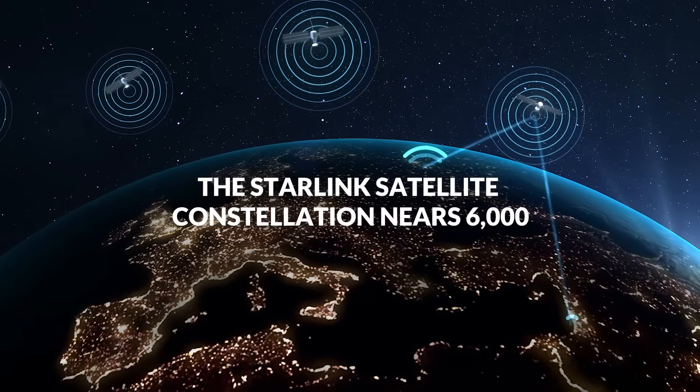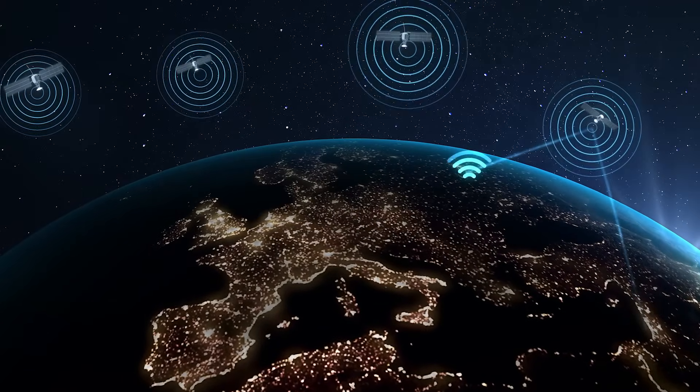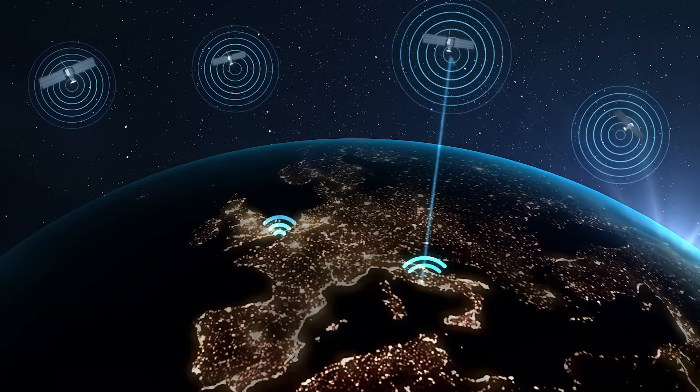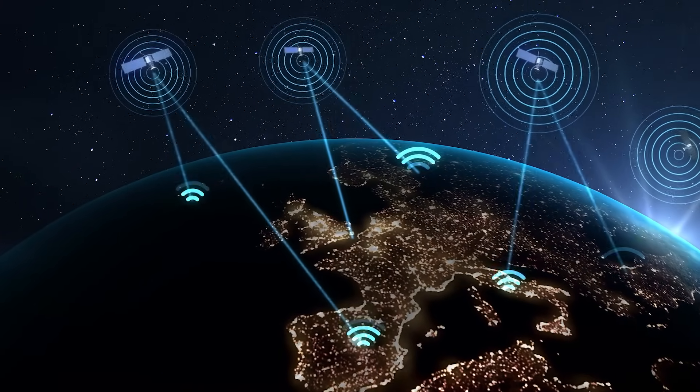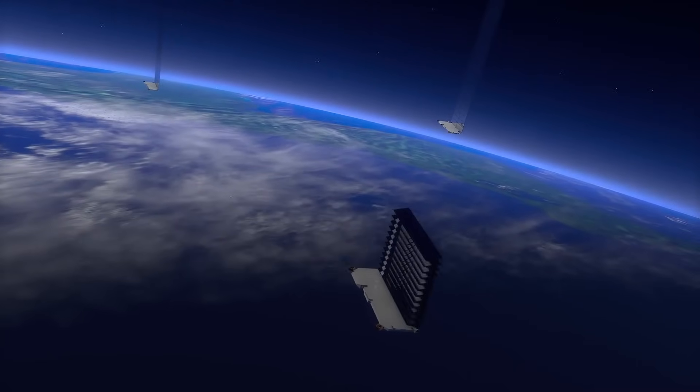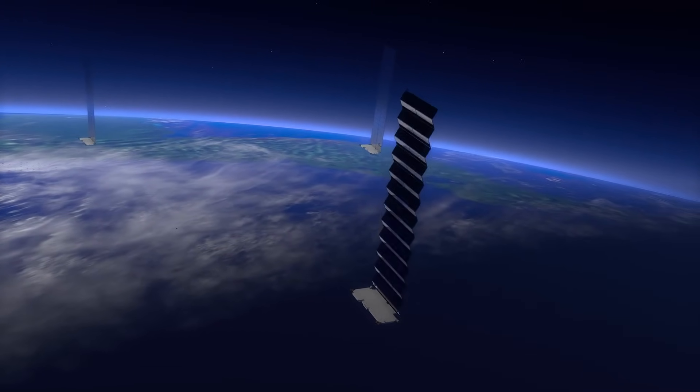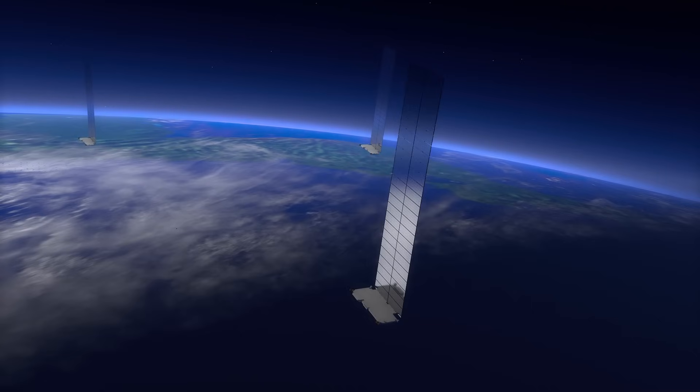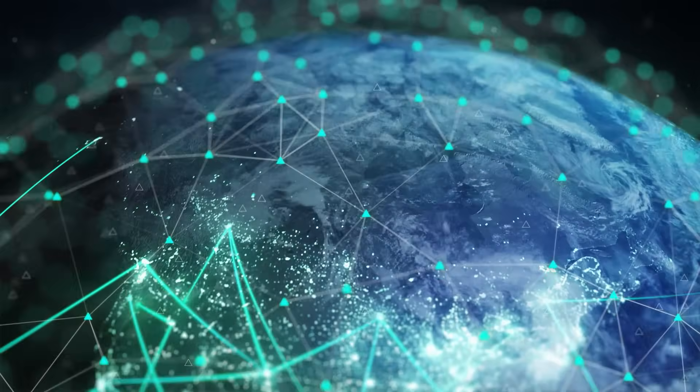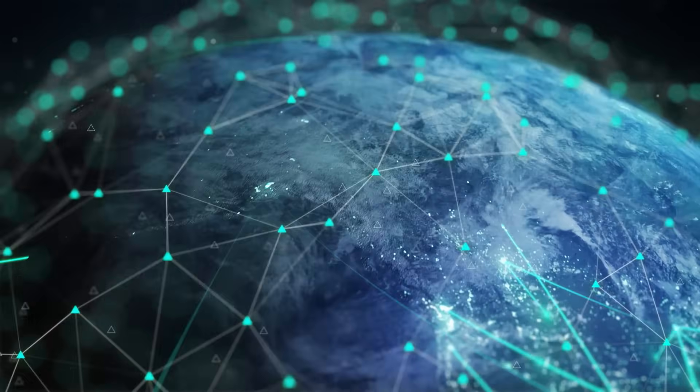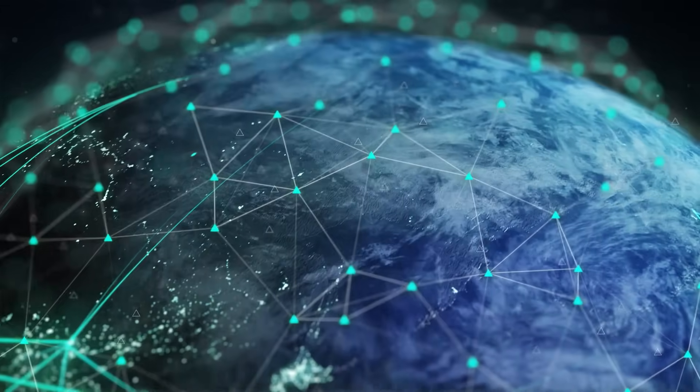The Starlink satellite constellation nears 6,000. Recently, the Starlink satellite constellation for internet connections has reached nearly 6,000 satellites. With the latest launch from Cape Canaveral, SpaceX, led by Elon Musk, is thus approaching the symbolic figure of 6,000 satellites placed in orbit, a record number designed to grow even further, perhaps even doubling. Several specialized sites have been keeping count, albeit unofficially.